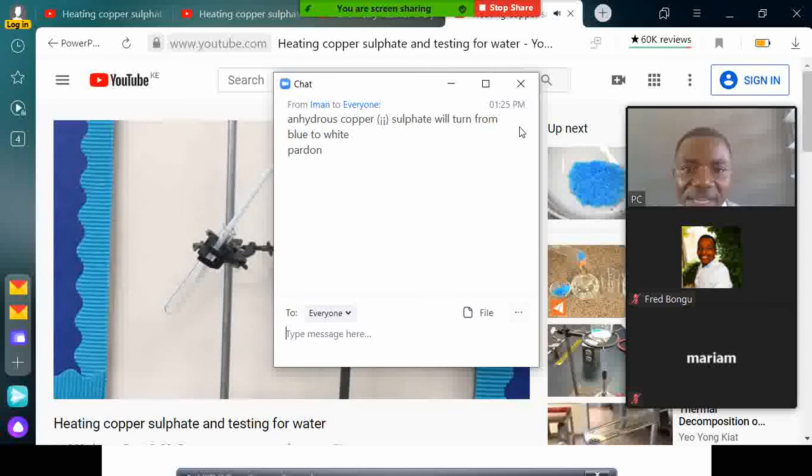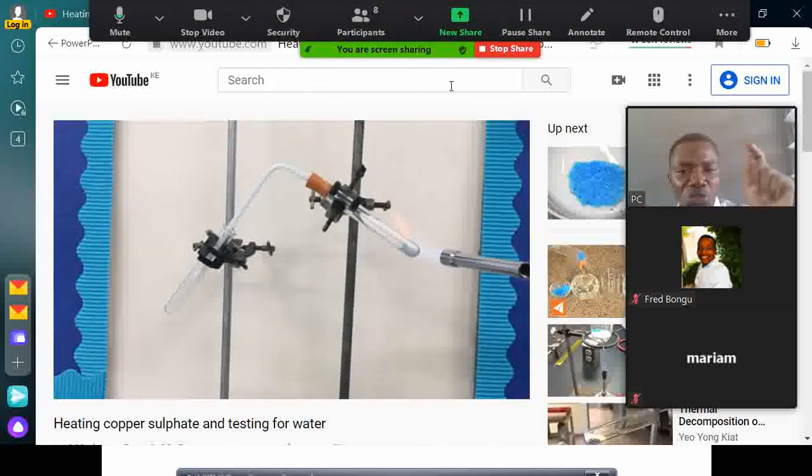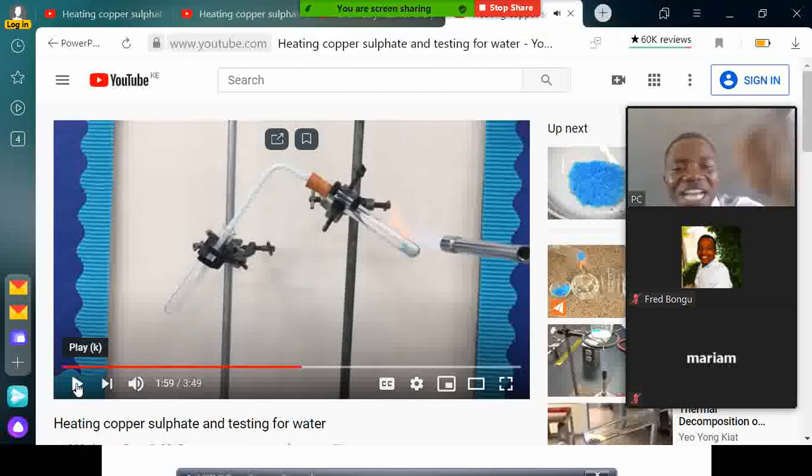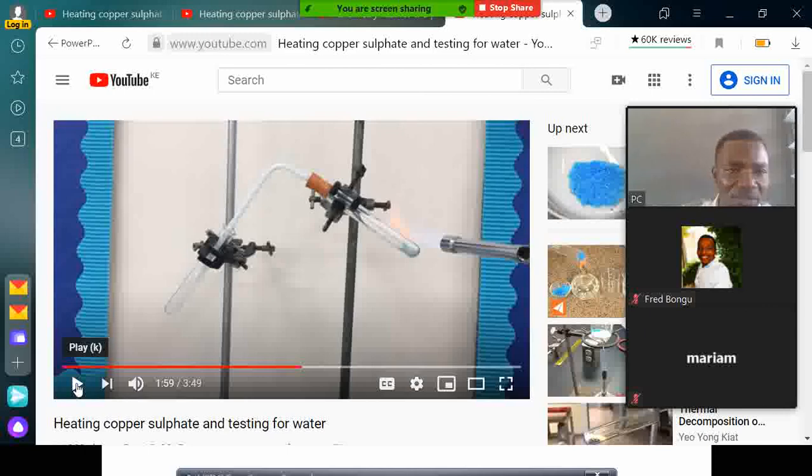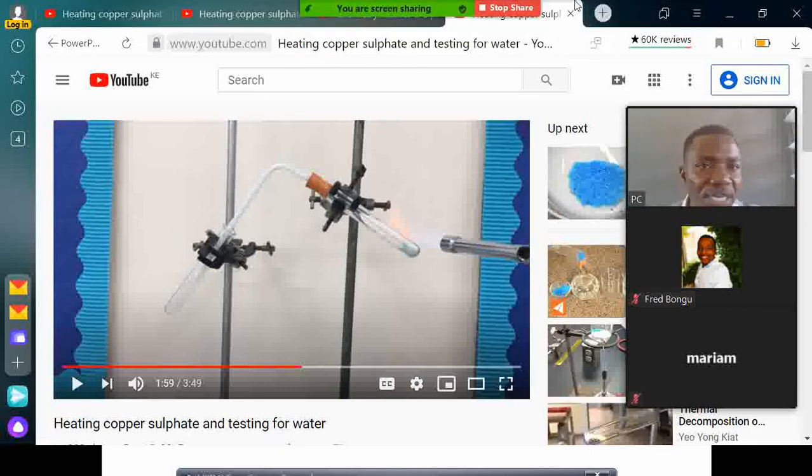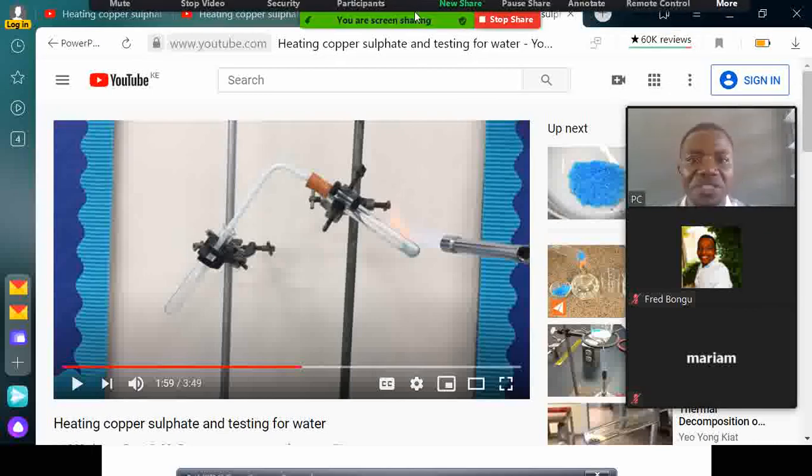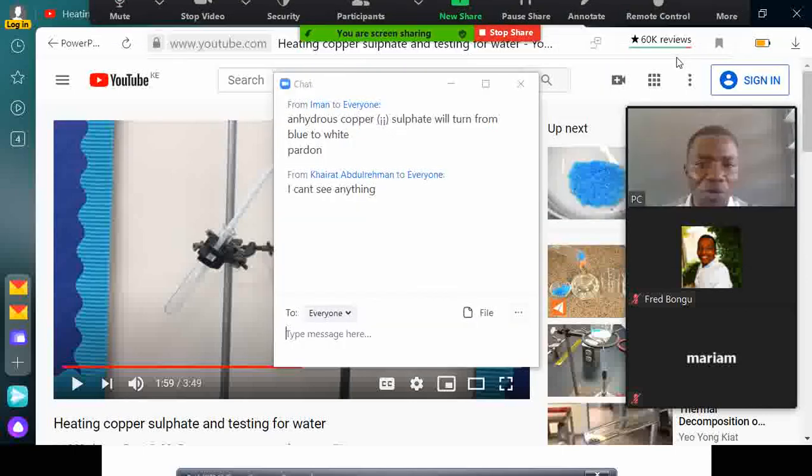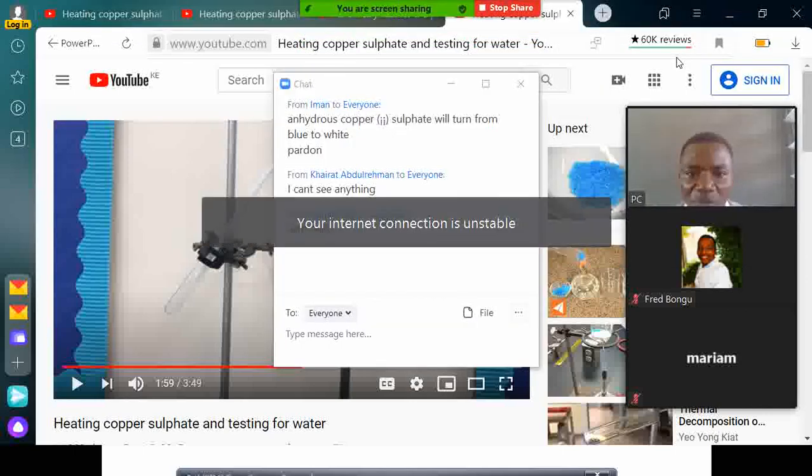Let me see what people are saying. We have Iman saying, the copper is turning from... No, I want you to write for me what you are observing, not what you know. From the experiment, as the color changed from which color to which color. I have given you one minute to type very fast. Let me start. Now, anybody here, let me see. I have seen a chat here. The color change. Whether the color has changed. Somebody is saying, can't see anything.